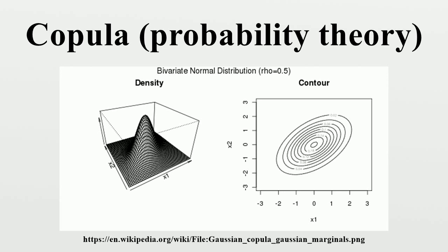Several families of copulas have been described. The Gaussian copula is a distribution over the unit cube. It is constructed from a multivariate normal distribution by using the probability integral transform. For a given correlation matrix, the Gaussian copula with parameter matrix R can be written using the inverse cumulative distribution function of a standard normal and the joint CDF of a multivariate normal distribution with mean vector 0 and covariance matrix equal to the correlation matrix.